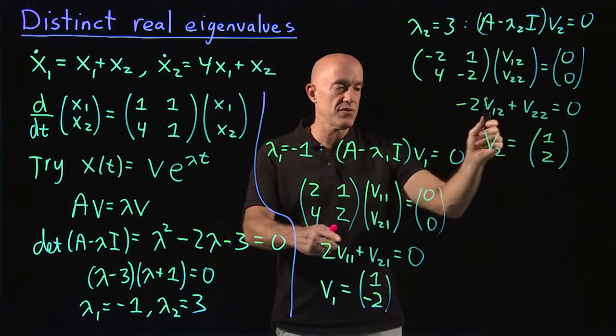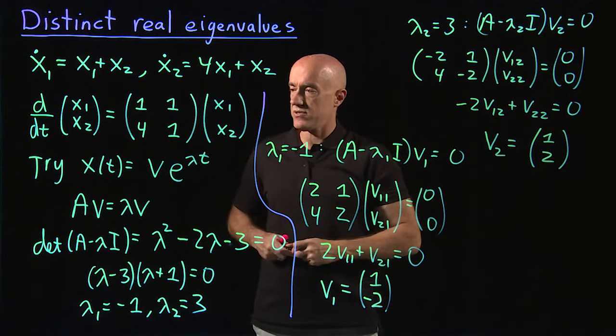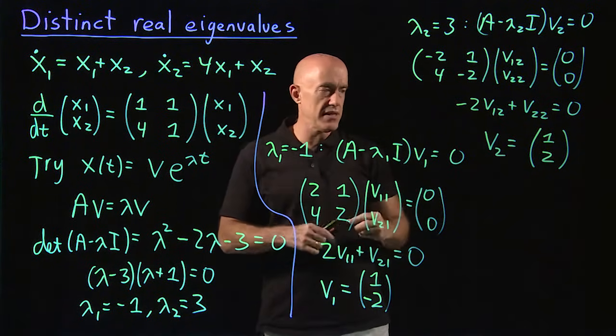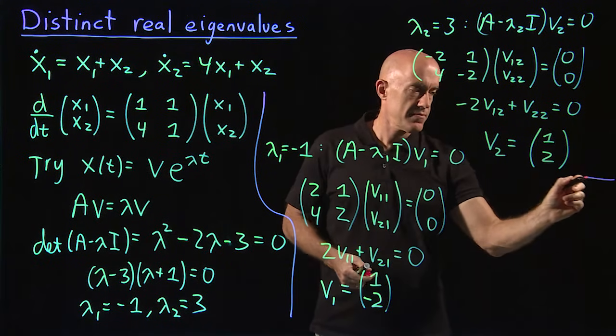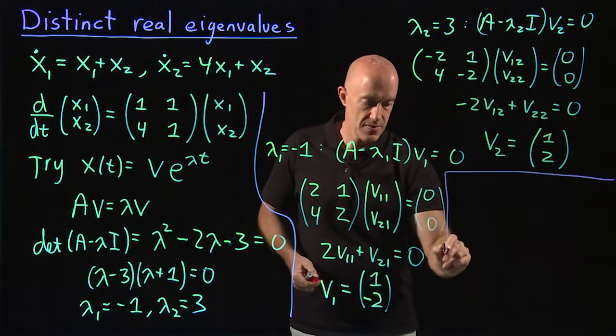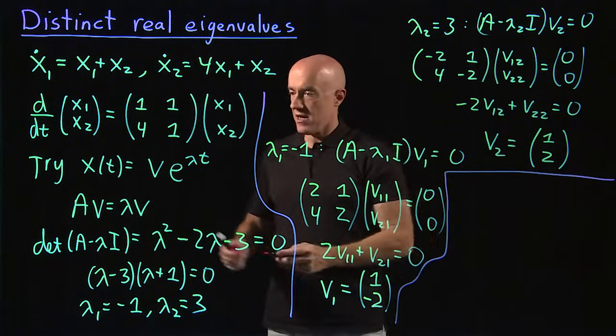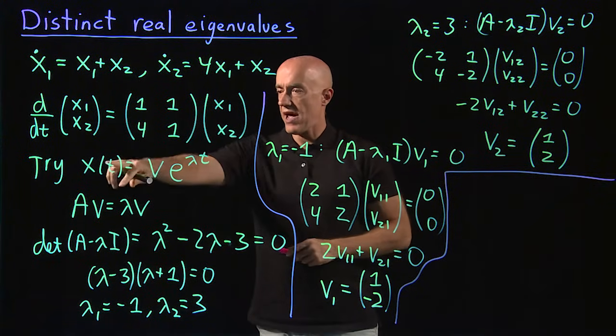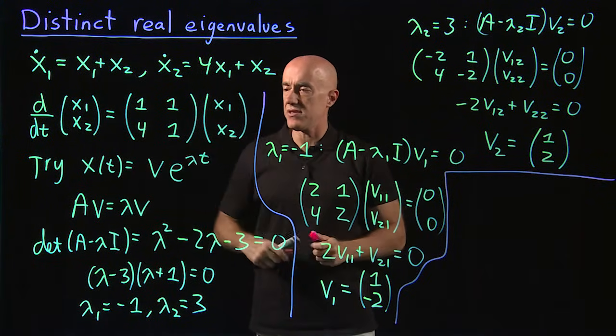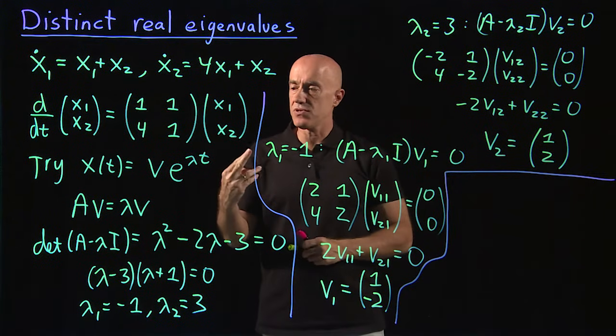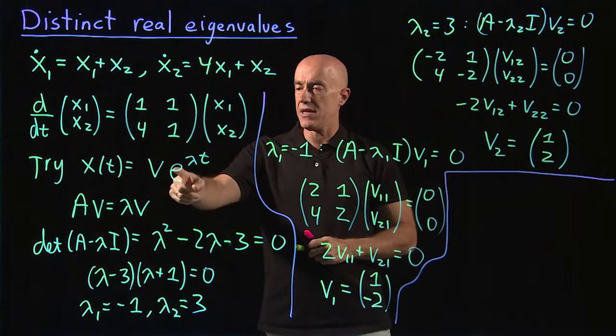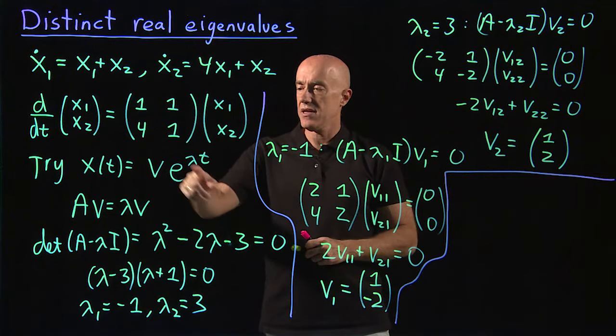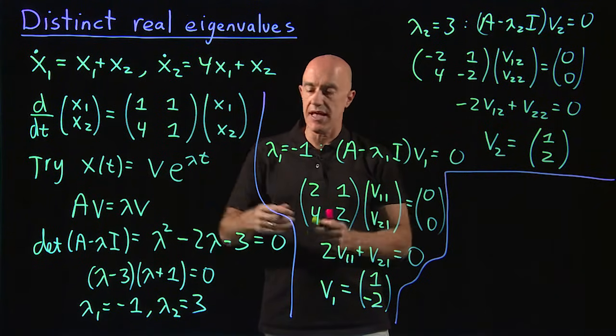So we have our two eigenvalues and our two eigenvectors. What is the general solution? We can use the principle of superposition. So x(t) equals v e to the lambda t. So we have two solutions: v₁ e to the lambda 1 t and v₂ e to the lambda 2 t.